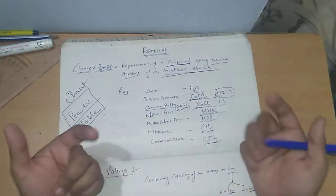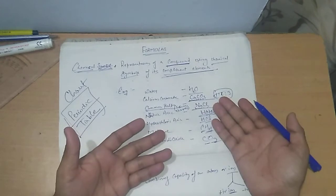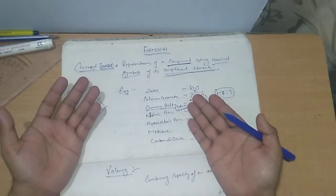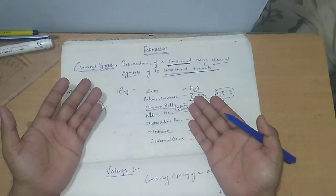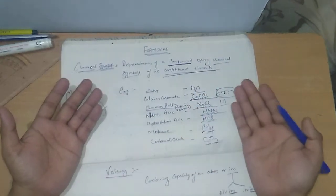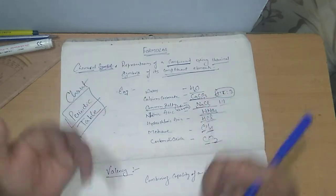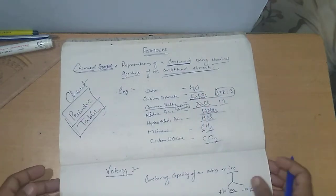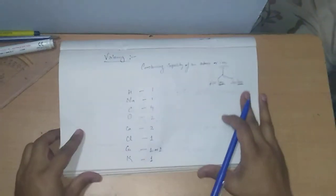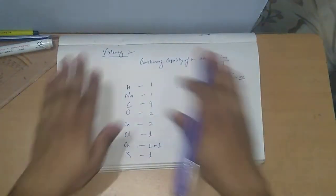Now, to understand how chemical formulas are formed and how we can write a chemical formula for a particular substance, we need to understand our next topic — valency.